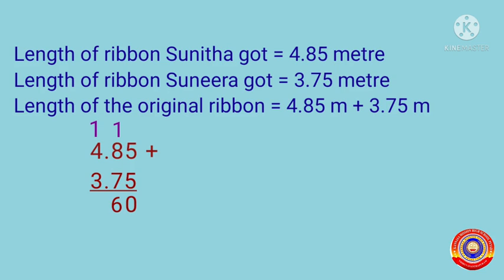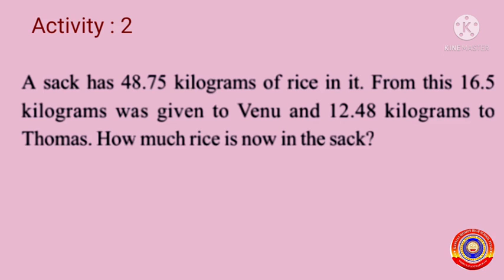Before adding the next number, put a decimal point here. Then add the next number in the whole number part: 1 plus 4 is equal to 5, and 5 plus 3 is equal to 8. Now we get 4.85 meters plus 3.75 meters is equal to 8.60 meters. Is it clear for you? Next, activity number 2.